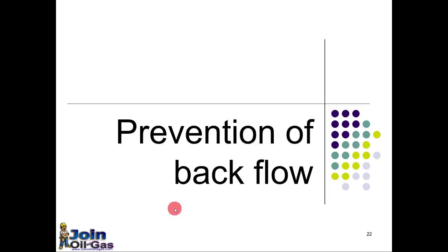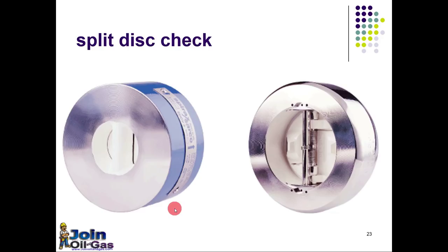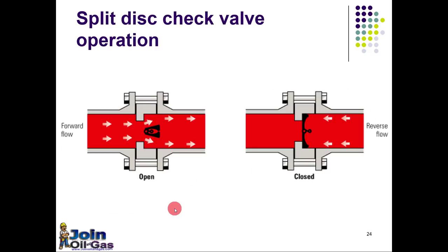Prevention of backflow is very important in the oil and gas industry to prevent the backflow of process fluids. For this purpose we use various types of check valves. Here you can see the split disc check valve. The pressure of the fluid opens the valve, and when the flow tries to return, this valve will close and stop the reverse flow or backflow.